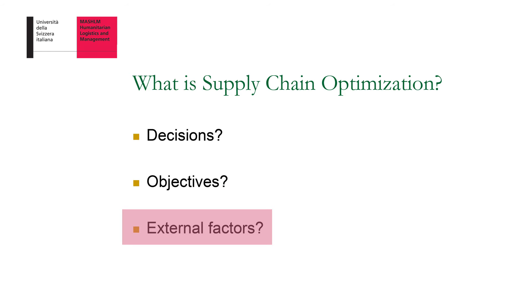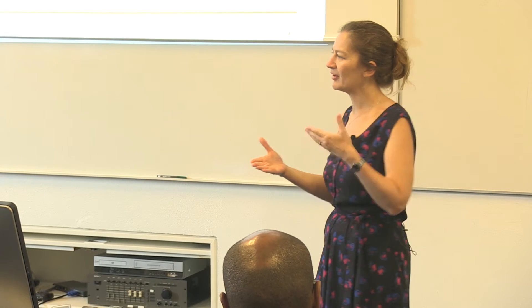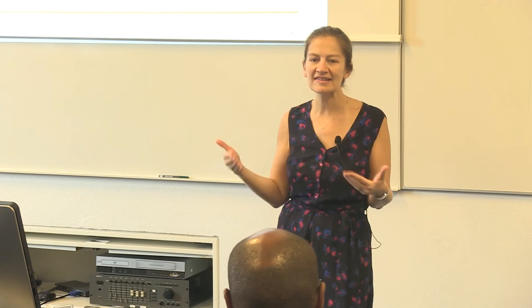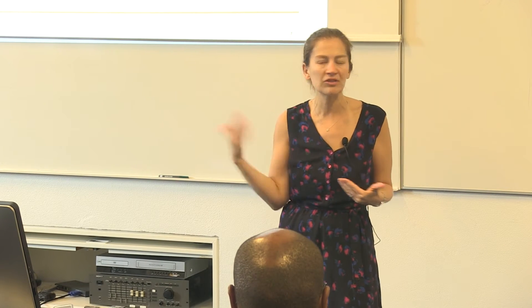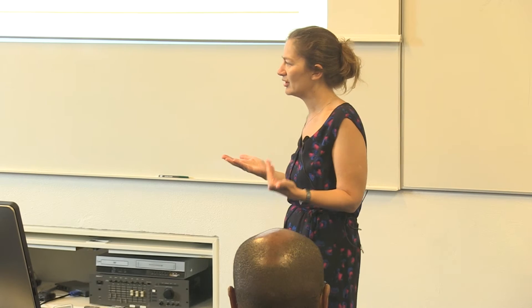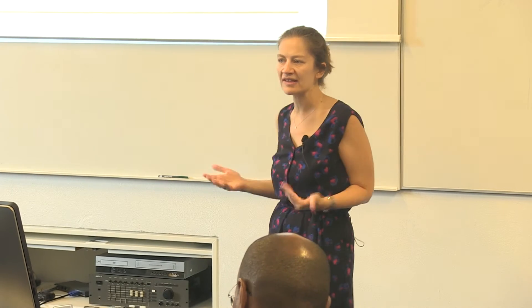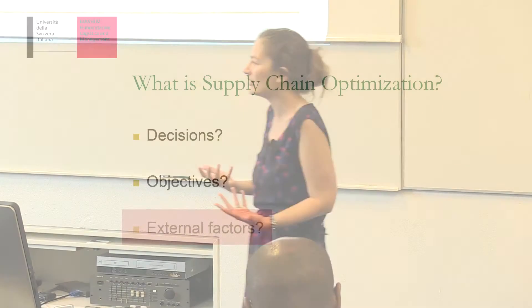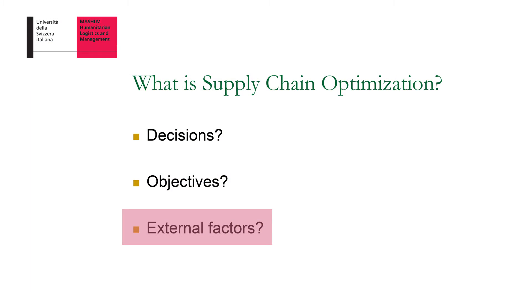And then finally, I would say external factors. But if you want to think about it in a more academic setting, you can think about it as constraints and parameters. What that means is, what are the system parameters that's telling you what you can do and what you cannot do, and at what cost or price? What are the capacities? These are the things that you don't have control over. It's just a description of the state of your system.